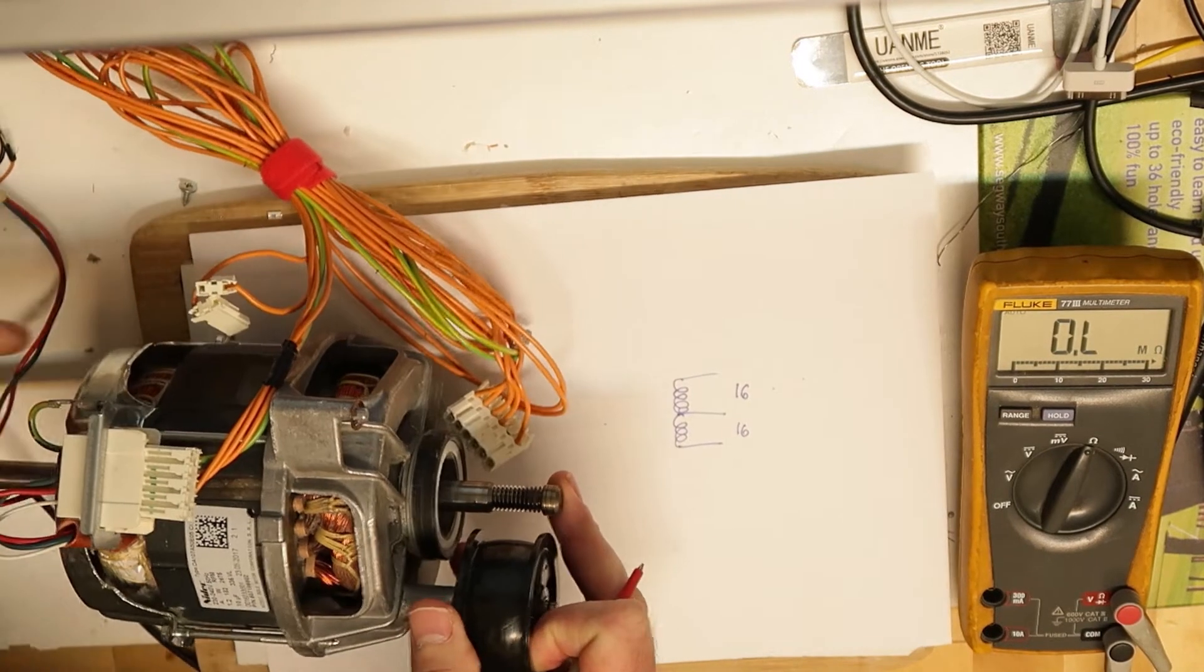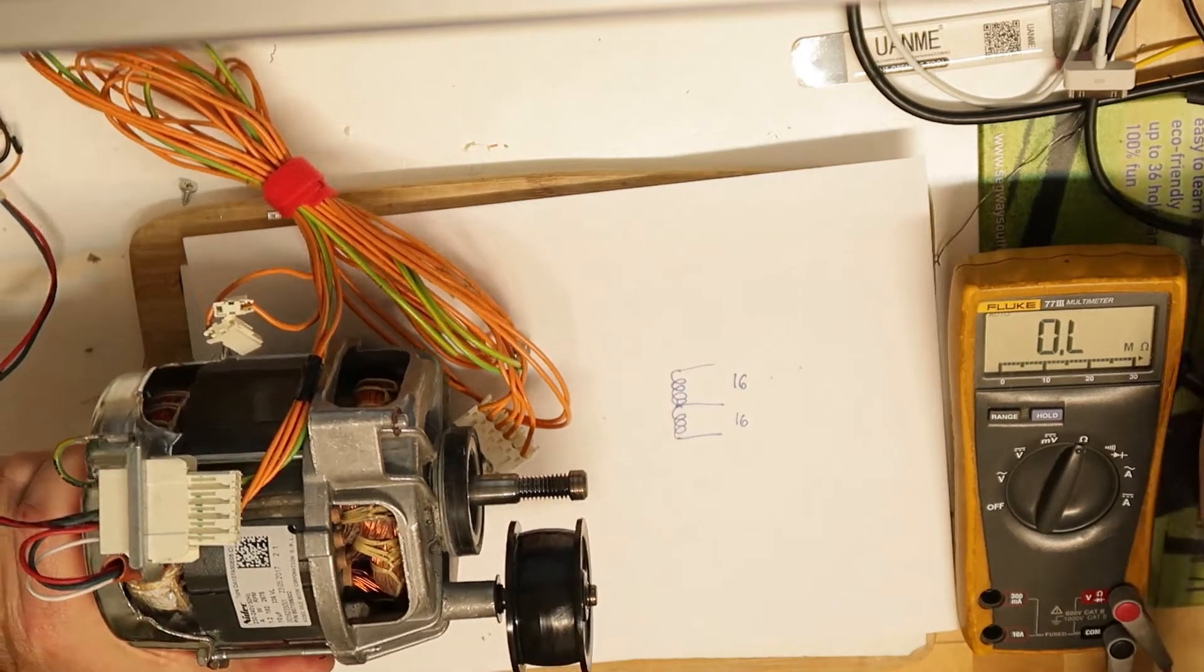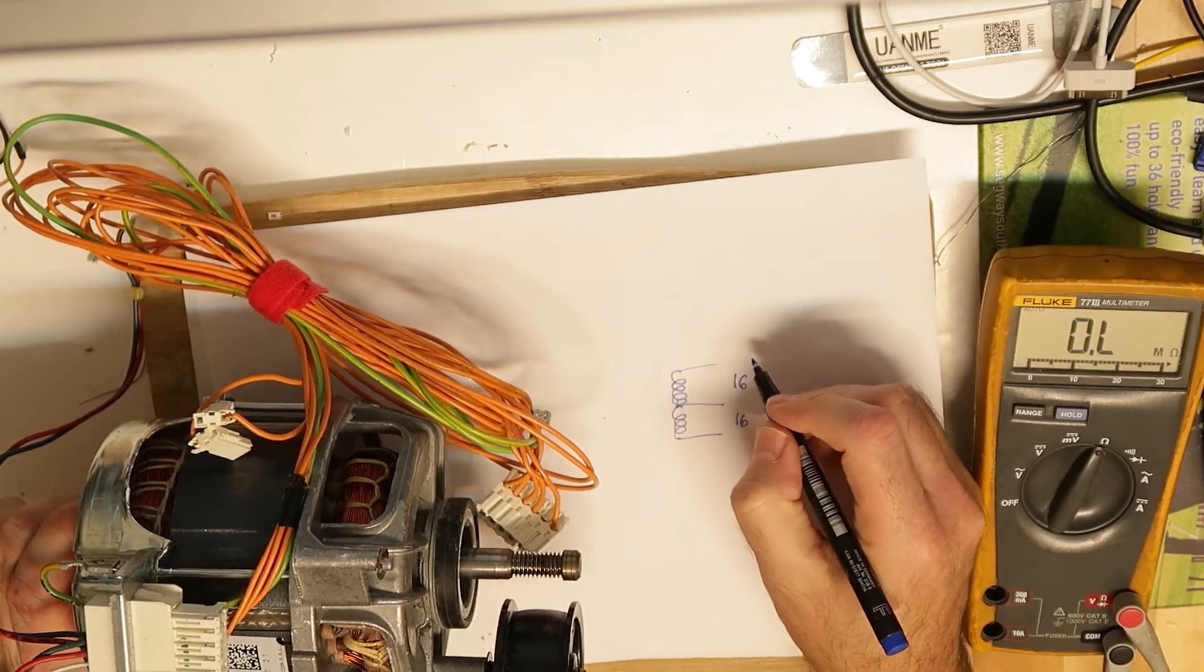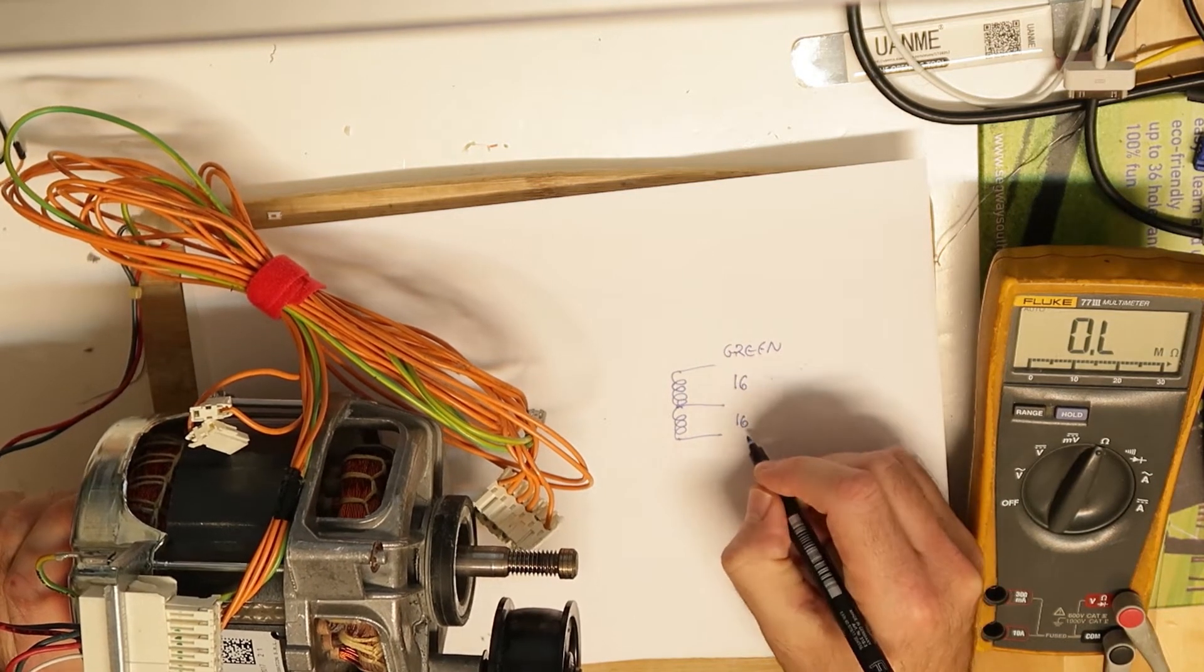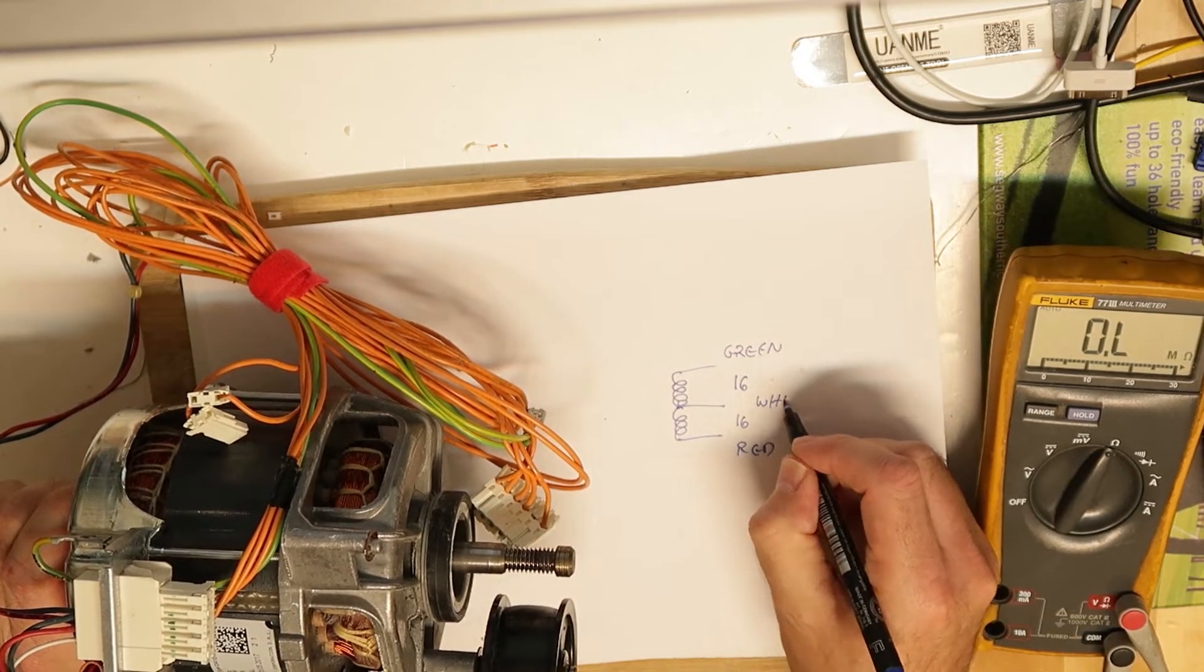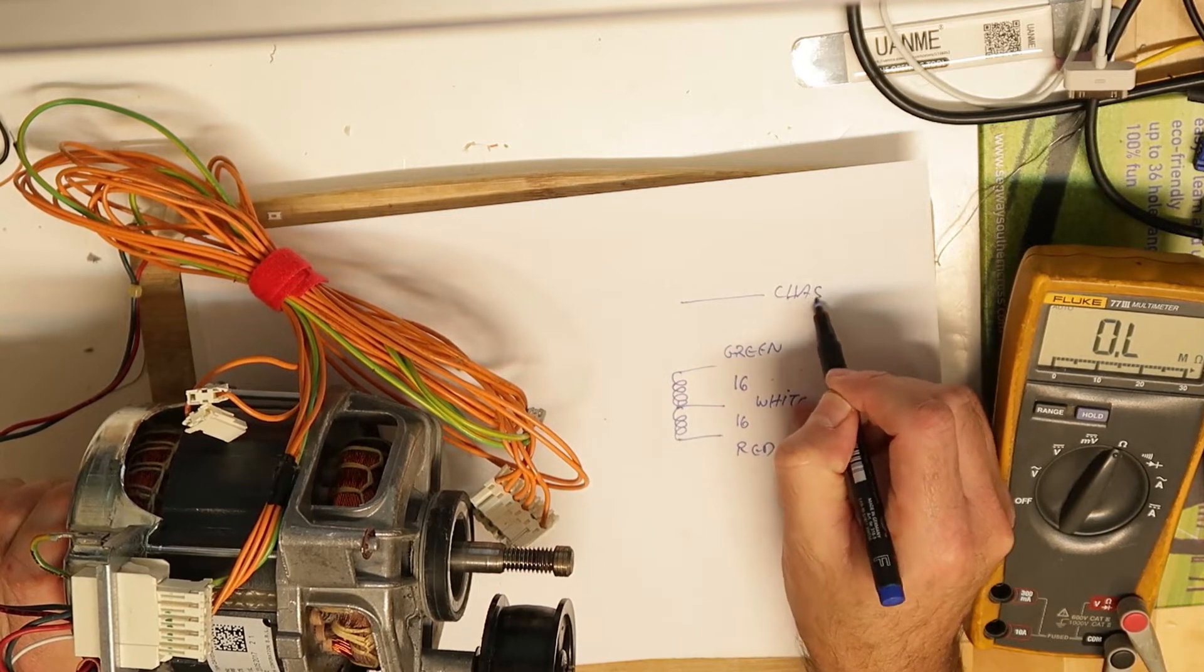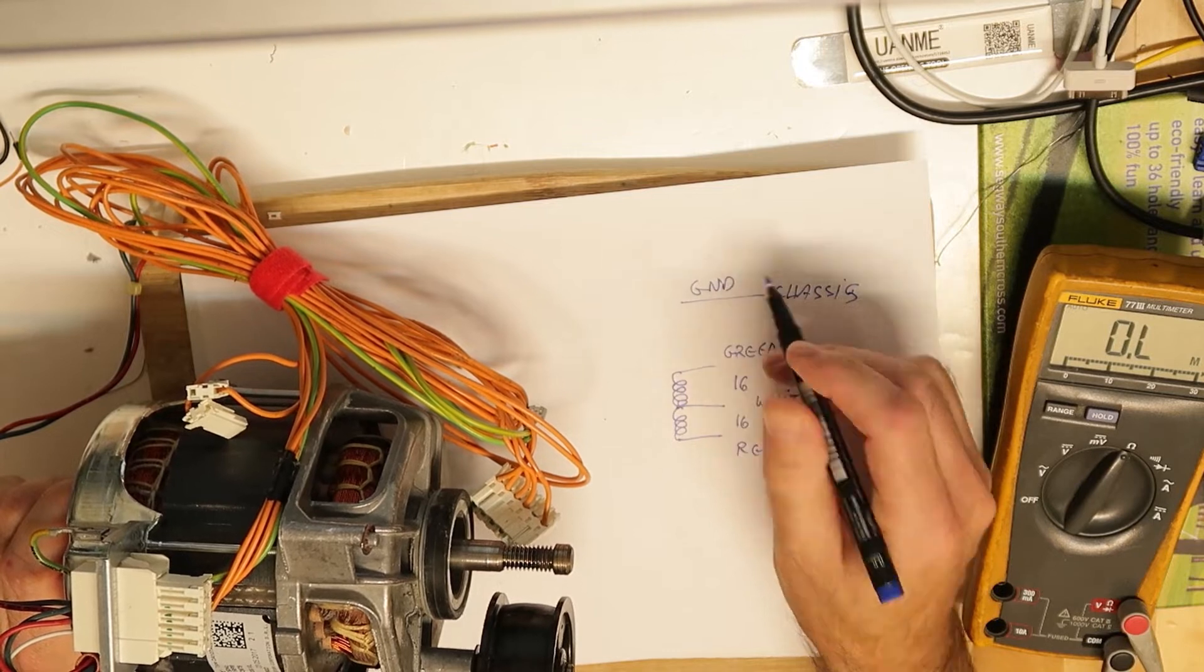I will write maybe the wire colors that I have. I don't know if it is the same color for all motors anyway. We have the green and we have a red - between them I have the 32 - and then we have the white, and of course we have the chassis which is the ground or the protection.